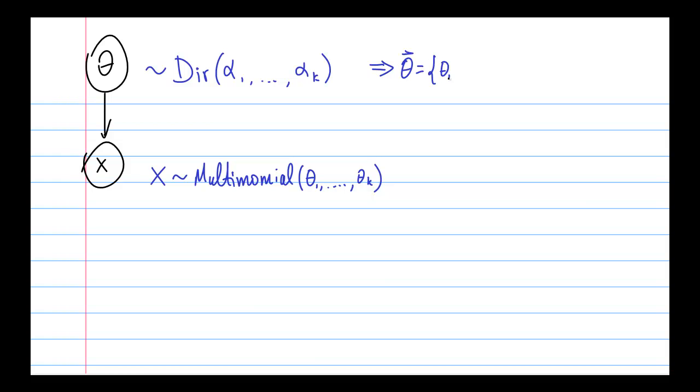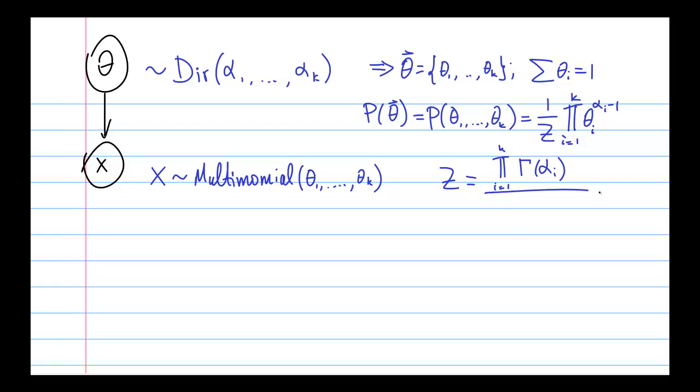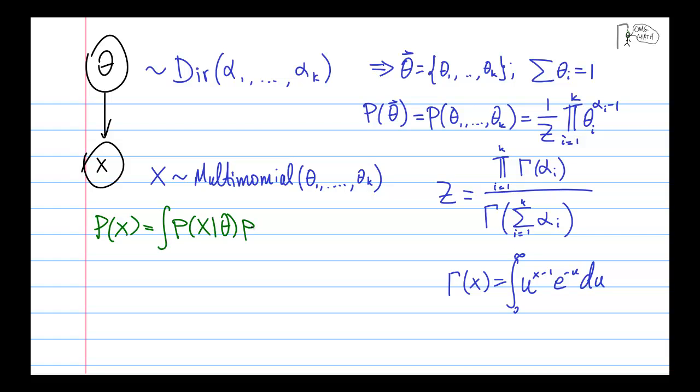And how does this work? Well, the probability of a particular set of multinomial parameters theta 1 through theta k is obtained through multiplying factors of theta i to the power of alpha i minus 1 and then dividing through by the partition function to normalize it. The partition function is somewhat involved - it's the product of the gamma functions of the alphas divided by the gamma function of the sum of the alphas. And the gamma function, of course, is defined through this integral. The upshot of all this is that we can compute the probability of x taking on a particular value by integrating over the possible values of the underlying parameters theta.